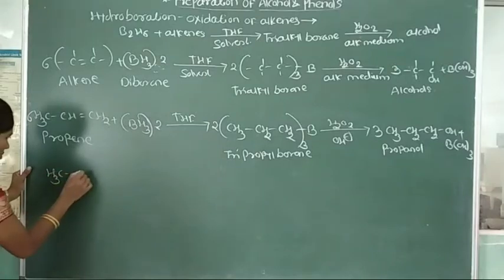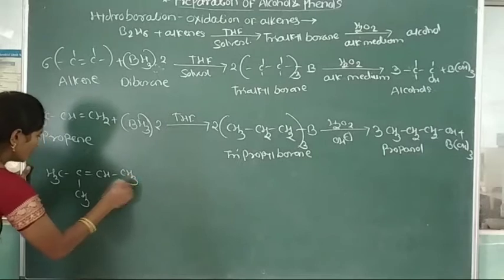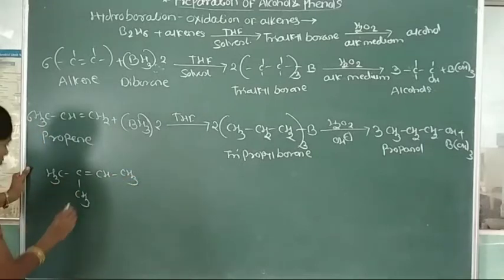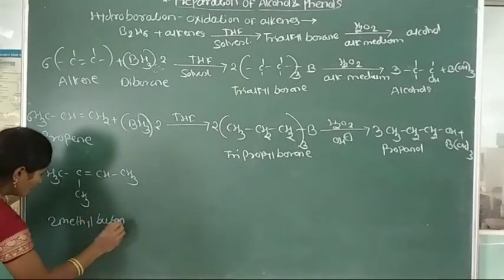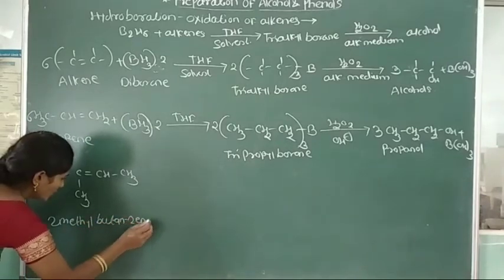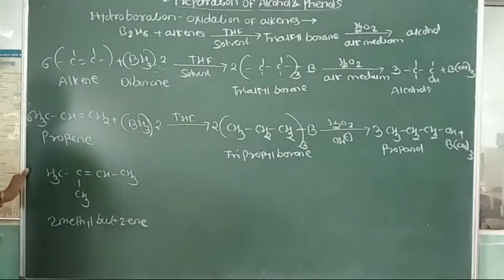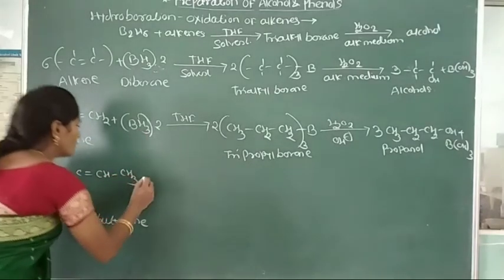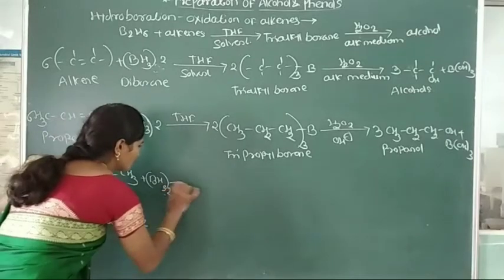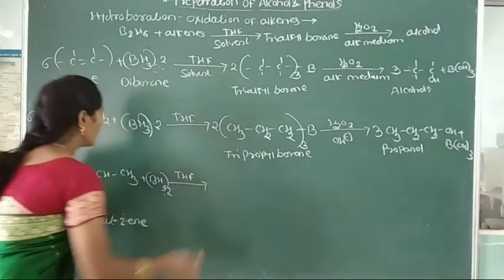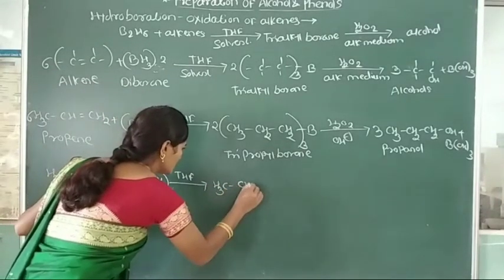Suppose here we take 2-methylbut-2-ene: CH3-C(CH3)=CH-CH3. This 2-methylbut-2-ene reacts with diborane, B2H6 twice, in presence of THF. Here formation of trialkyl borane, that is CH3CH(CH3)-CH(B)- structure with (CH3)3B.